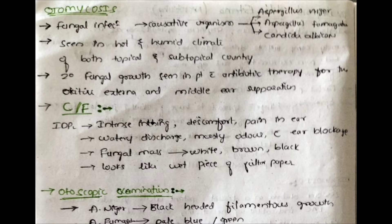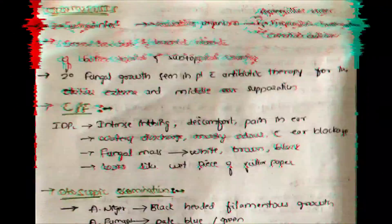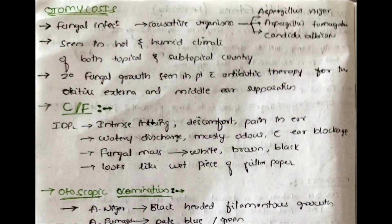Otomycosis is seen in hot and humid climates of both tropical and subtropical countries, because this helps in easy growth of the fungus. Secondary fungal growth is also seen in patients on antibiotic therapy for otitis externa and middle ear suppuration — meaning during antibiotic treatment for those diseases, the patient can develop secondary fungal growth in the external auditory canal.